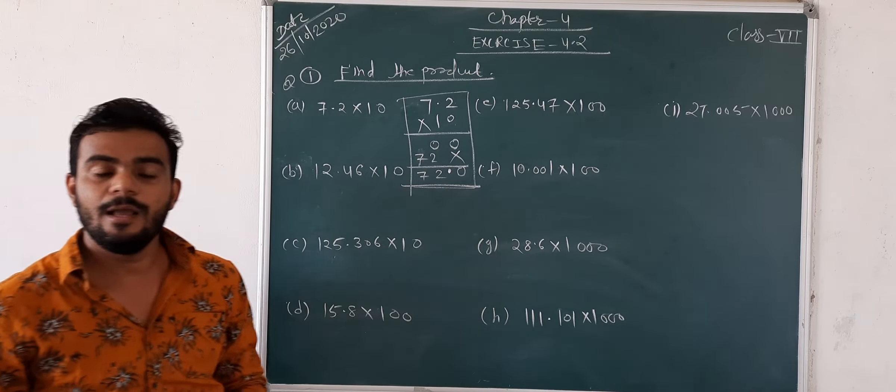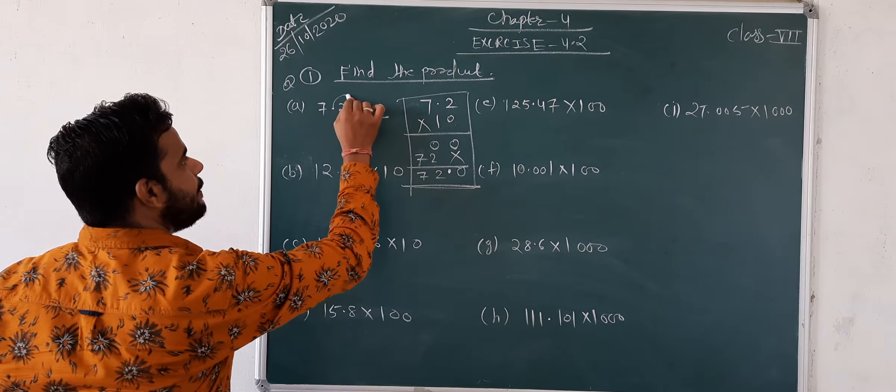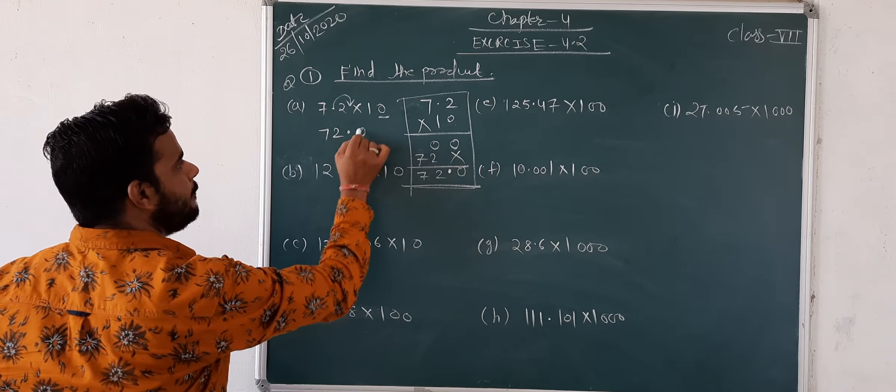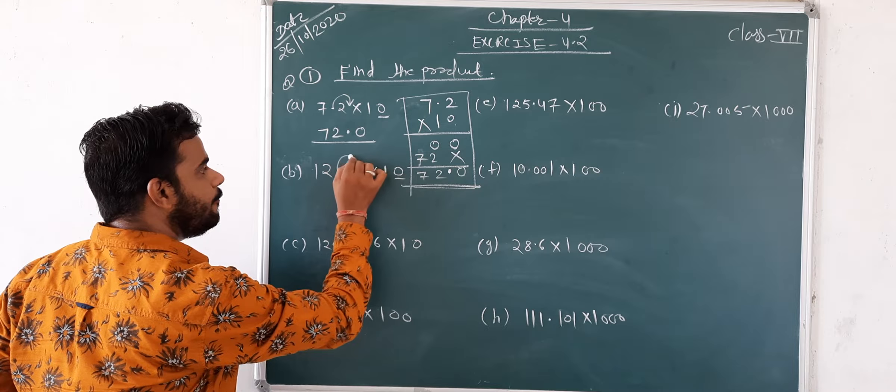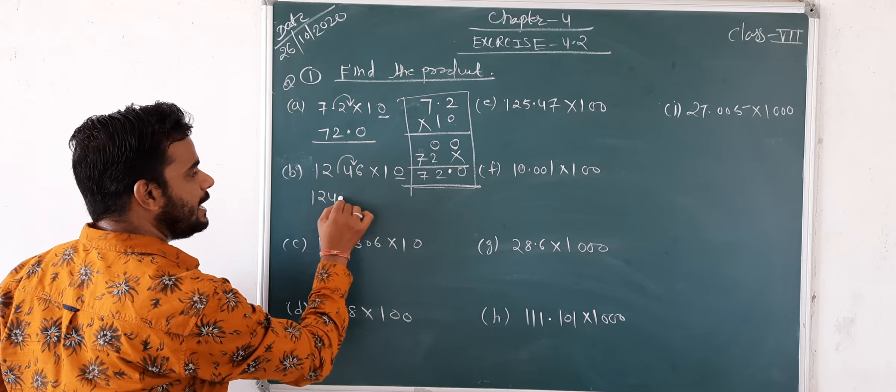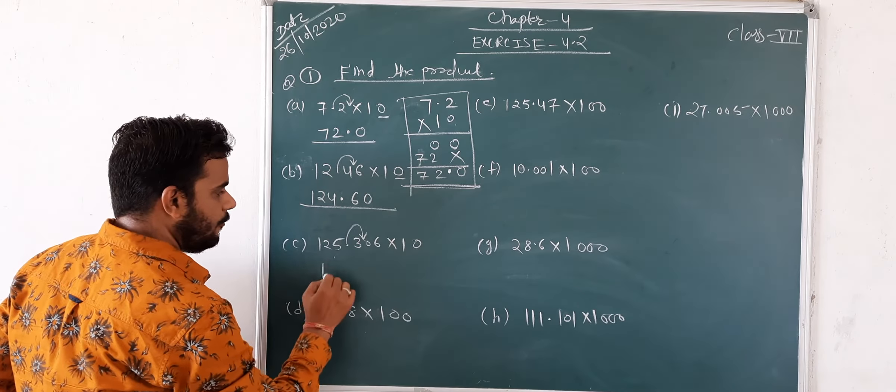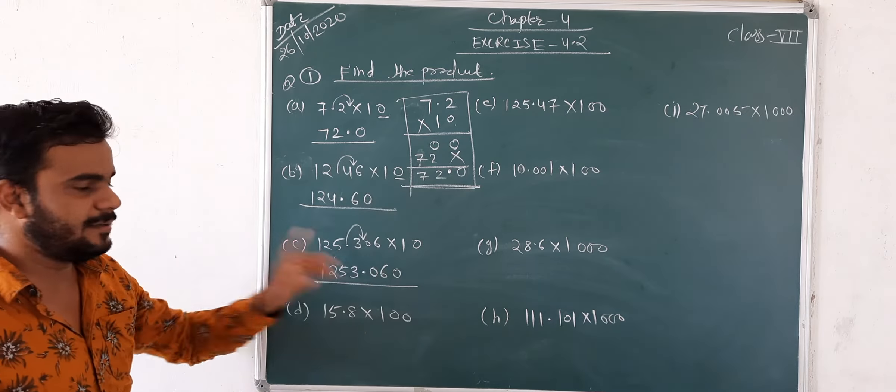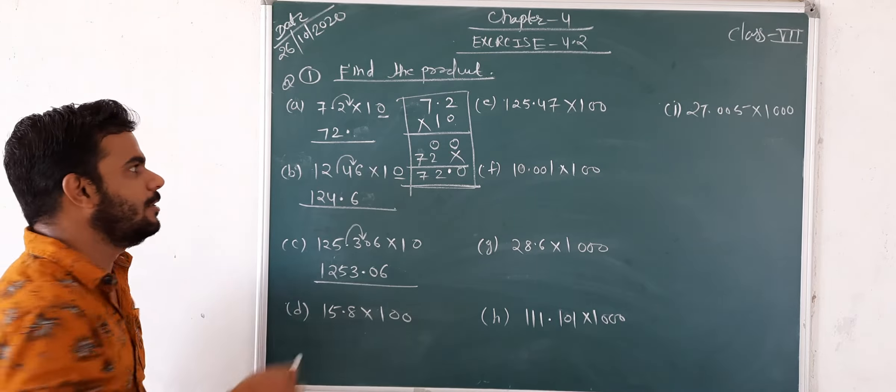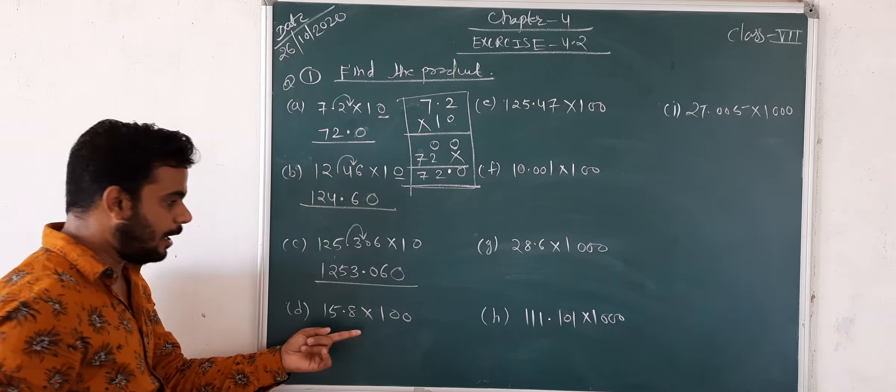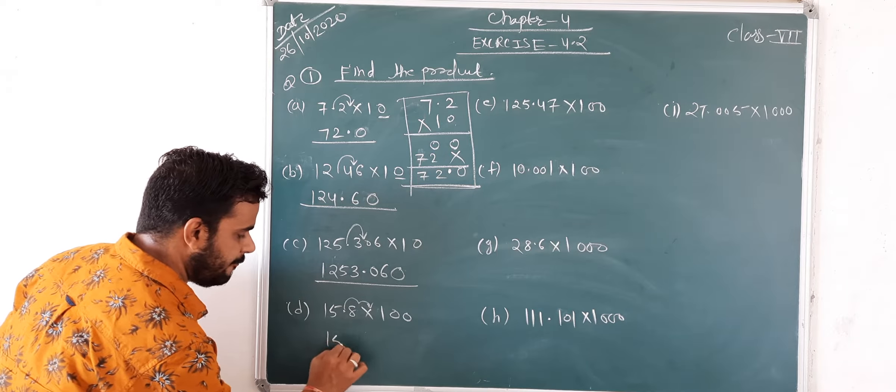Suppose, first multiplication method is there. 7.2 x 10. After one digit point, then 72.0 is your answer. This is simple, which we know from the first class. But here we have to solve directly. If you write one point, we will move one place right hand side.